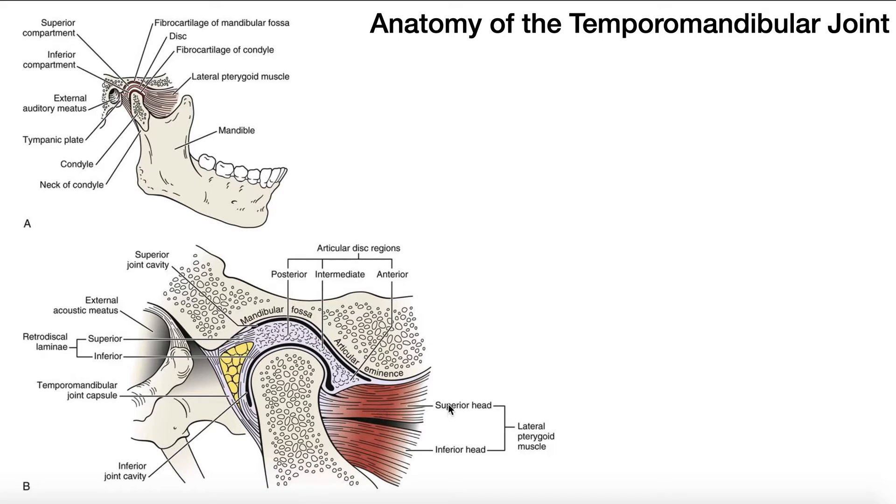So in other words, when the lateral pterygoid contracts, over here's the insertion. So it's going to be pulled in this direction, which is anteriorly, and it'll be able to pull the disc anteriorly and the mandibular condyle anteriorly. So hopefully that makes sense.